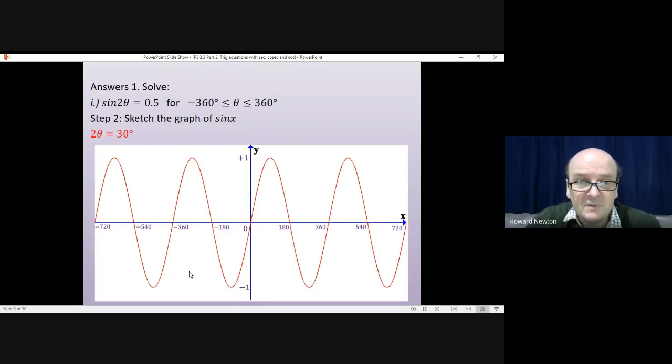That was the solution we found using the calculator. 2θ could equal 30 degrees. At this point we just mark that in the right place on the graph. So it would go there. 30 degrees on the x axis and 0.5 on the y axis. That's the first solution. That's the one we found using the calculator.